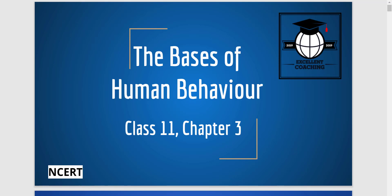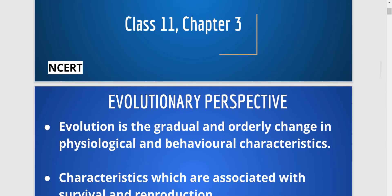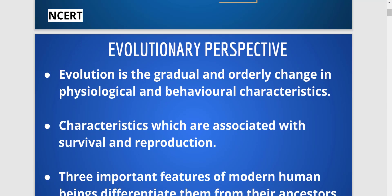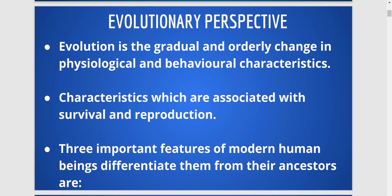Hello friends, welcome to my channel Excellent Coaching. We are starting with the third chapter, which is the basis of human behavior. We'll start with the evolutionary perspective. What is evolution? It is the gradual change — an orderly change in our physiological, biological, and behavioral characteristics, and these characteristics are mostly associated with survival and reproduction.